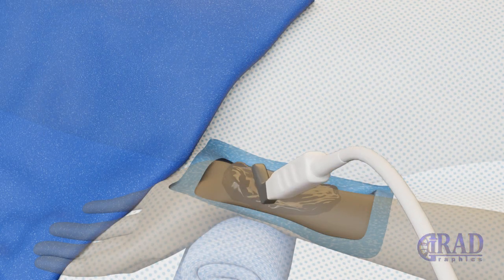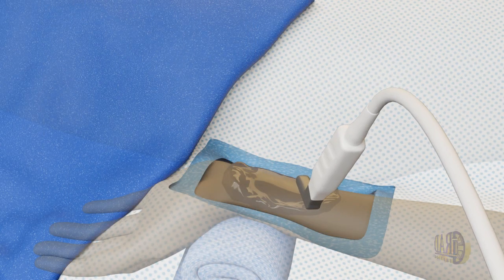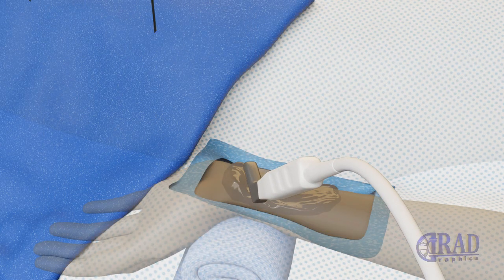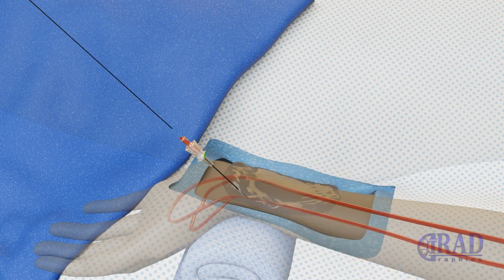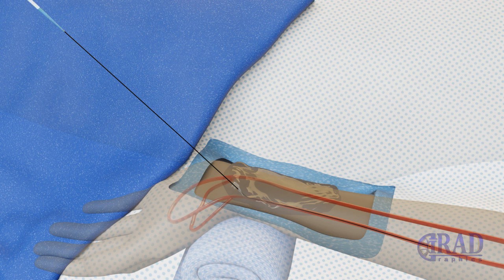As a first step, the left radial artery is identified and accessed under ultrasound guidance using a micropuncture needle. Once blood return is noted, a wire is advanced through the needle into the left radial artery. The needle is subsequently exchanged for a slim sheath.